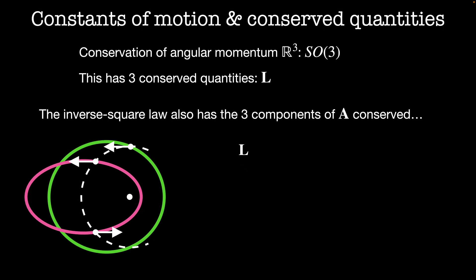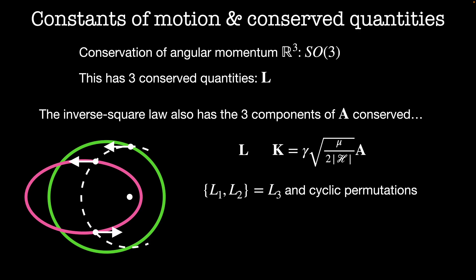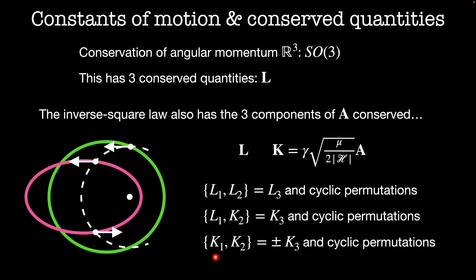I know that the angular momentum is conserved and that A is conserved, but for the sake of making the algebra easier, I'm going to write down a new vector K, which is basically a rescaling of the Runge-Lenz vector A by energy. Since both the Runge-Lenz vector and the Hamiltonian are constants of the motion, so is K. We can work out the algebra of Poisson brackets for these conserved quantities. The Poisson bracket of L1 with L2 is equal to L3, and this holds for all cyclic permutations of 1, 2, 3. Likewise, the Poisson bracket of L1 with K2 is equal to K3, also for all cyclic permutations. And the Poisson bracket of K1 with K2 is plus or minus K3, where the sign depends on the total energy — plus if energy is negative, minus if positive. This gives us an algebraic structure for the relationships between the conserved quantities.